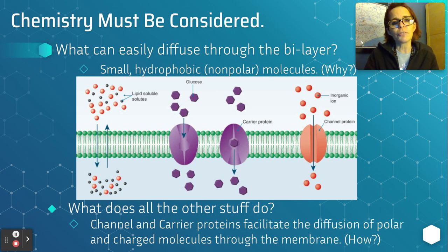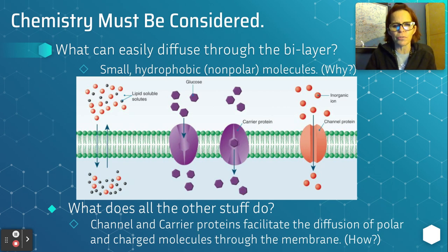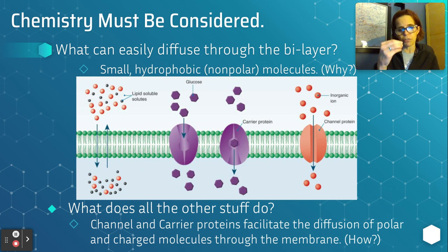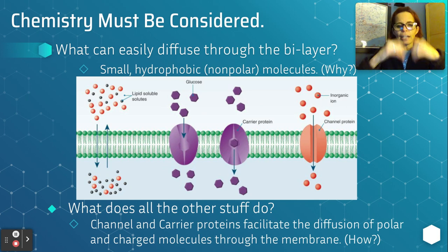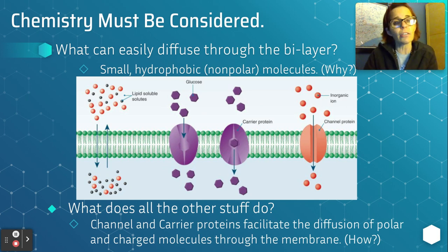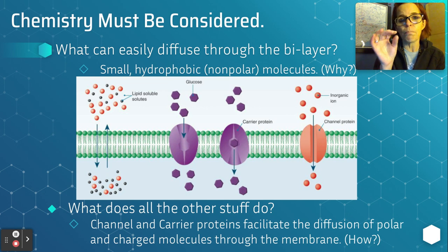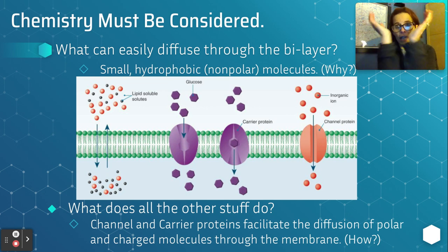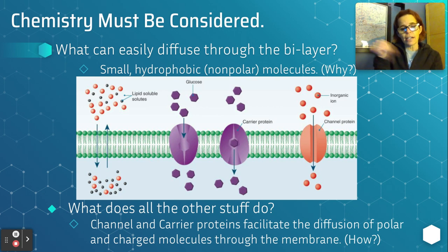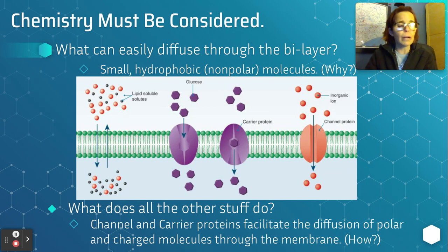I want you to see molecules going from areas of high concentration to areas of low concentration. Notice that with the carrier protein, the shape is changing — as the molecule touches it, it causes a conformational change. It goes from one shape to another and releases the glucose molecule on the other side. That's called a carrier protein. No ATP is necessary; it is the presence of glucose that changes the shape. The channel protein on the far right is basically open and allows certain ions or polar molecules to pass through.